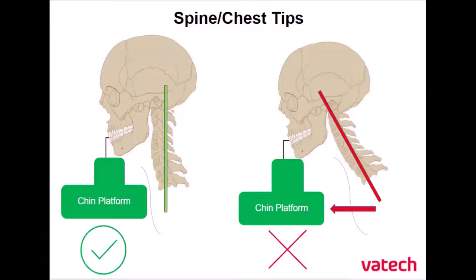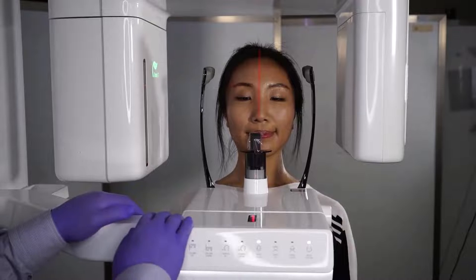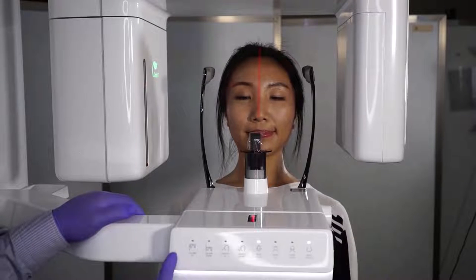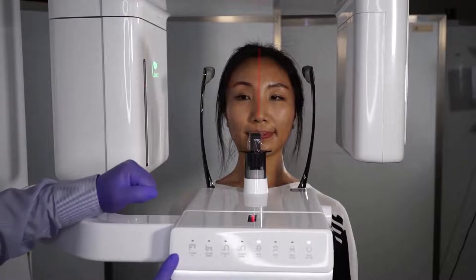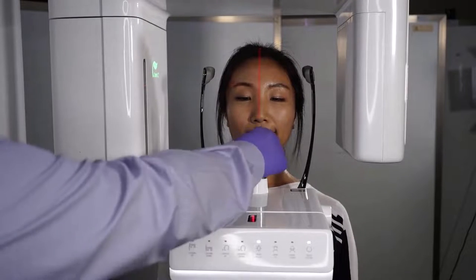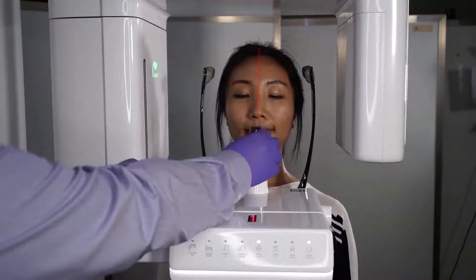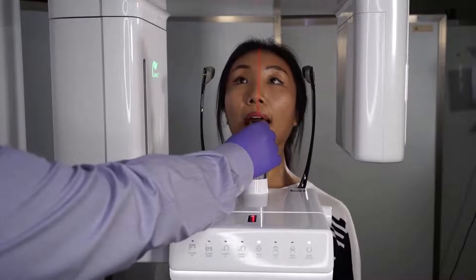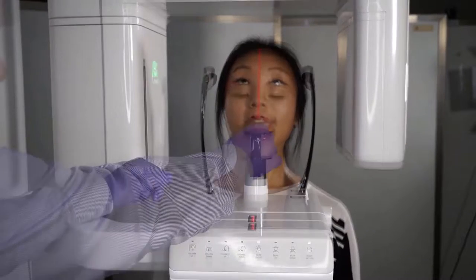Ideally we want the patient's spine as straight as possible and chest close to the device, so we'll have the patient take a step forward and notice the angle of the body. The goal is to have the spine as vertical as possible when biting on the bite stick to avoid spinal shadowing. With a clean bite stick cover, have the patient bite on the bite stick within the grooves firmly in place.